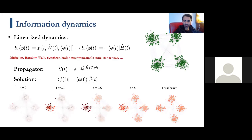The field's evolution is governed by a very general type of dynamics, which we linearize to find a Schrödinger-like equation governing the evolution of the information field. We derive from it a propagator that leads to the solution of how the field propagates in the network. For this specific example I use continuous diffusion, although many other types of dynamics can be described using this Schrödinger-like equation.